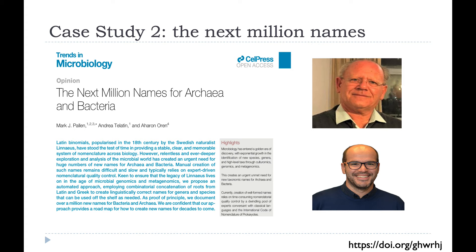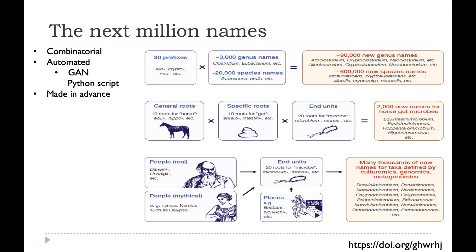The next case study followed on from that. I said, why don't we roll this combinatorial approach out much more widely and perhaps automate it? We enlisted the help of my colleague Andrea Telletin, a biometrician. We adopted a combinatorial approach, mixing different word components together, and created a Python script called GAN — Grand Automated Nomenclature Tour — and rolled that out over lots of names from lots of different contexts.